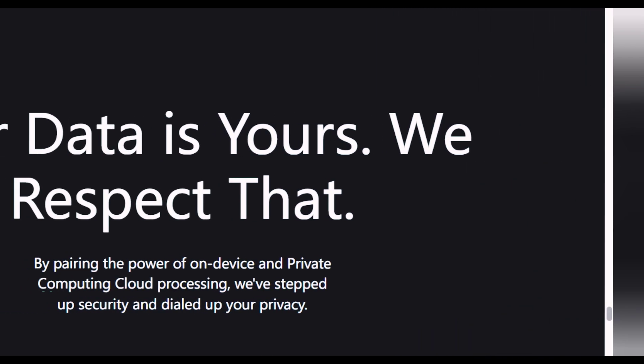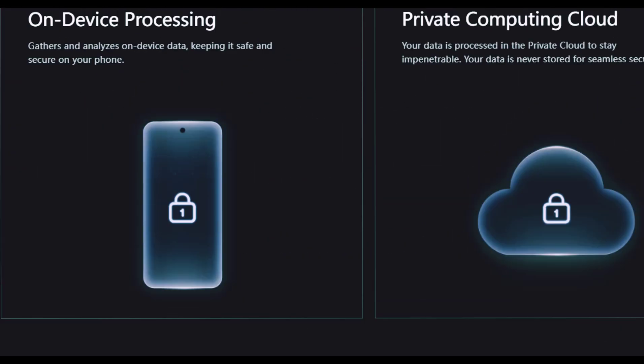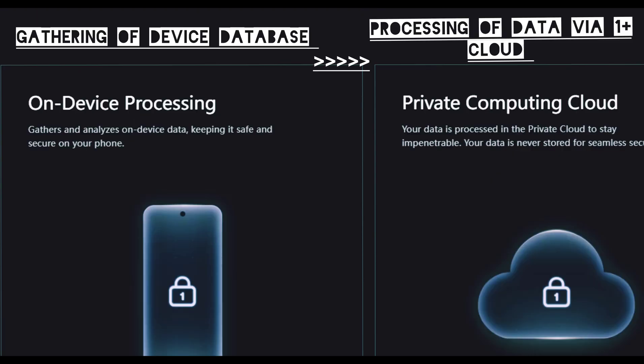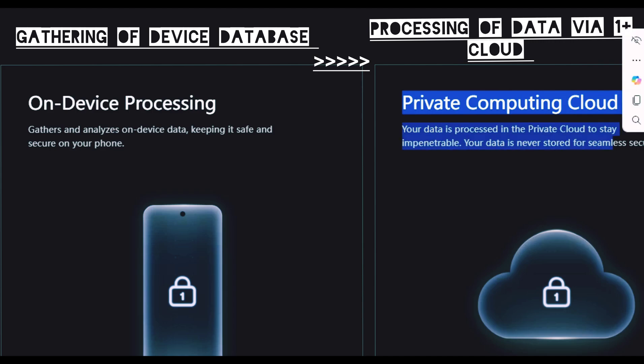Next is a new AI Security feature, which will be available in the new OxygenOS update. All your data on the device will be analyzed by the new AI Security feature and kept secured. This data will be processed via private computing cloud servers of OnePlus, making your data more secured and impenetrable. Your data will not be stored by these servers, ensuring seamless security.